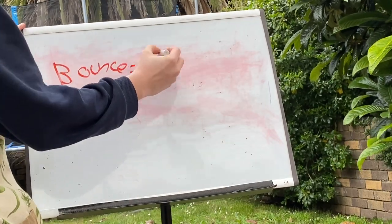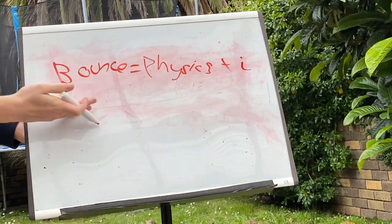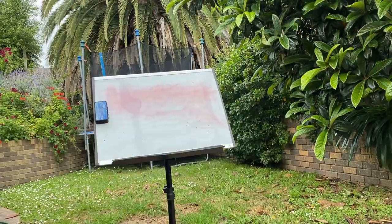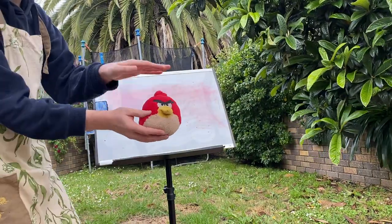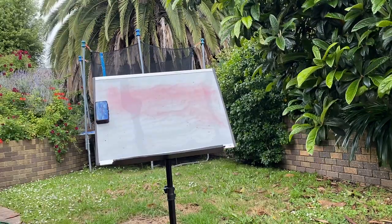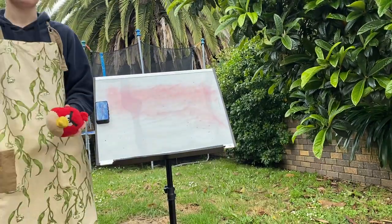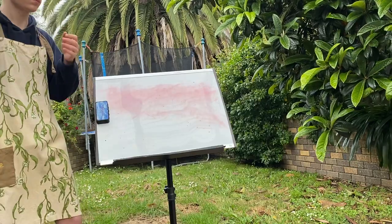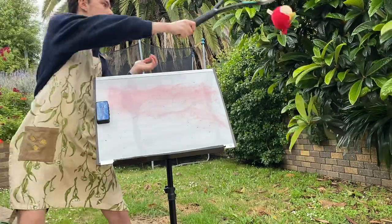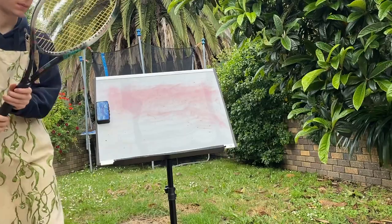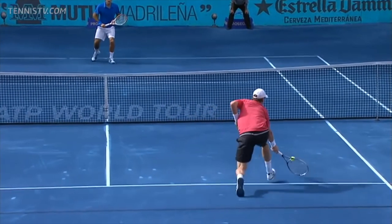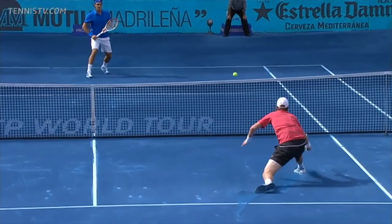The bounce is easily the most complex part of the shot when it comes to the physics of it. That's why I employed my friend Red to help demonstrate. In tennis, most shots are hit with spin. There are two types of spin: topspin and backspin, or slice. The way the ball is spinning before and during the bounce heavily affects its trajectory after the bounce.